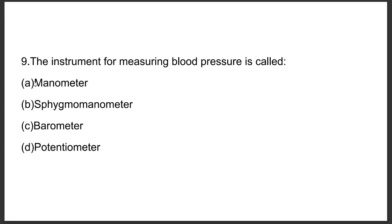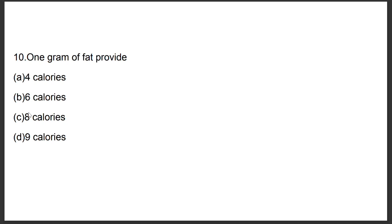Question number nine: The instrument for measuring blood pressure is called — Option A: Manometer, Option B: Sphygmomanometer, Option C: Pyrometer, Option D: Potentiometer. The answer is Option B, sphygmomanometer. Question number ten: Fat provides — Option A: Four calories, Option D: Nine calories. The answer is Option D, nine calories.